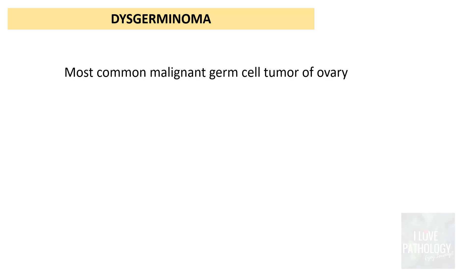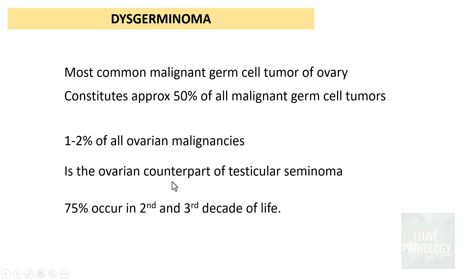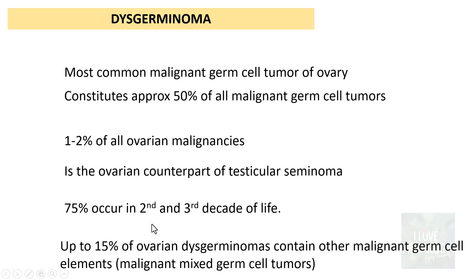Dysgerminoma is the most common malignant germ cell tumor of the ovary, constituting approximately 50% of all malignant germ cell tumors and 1 to 2% of ovarian malignancies. The most common ovarian malignancy overall is still surface epithelial tumors — serous and mucinous carcinomas. Dysgerminoma is the ovarian counterpart of testicular seminoma. 75% of dysgerminomas occur in the 2nd and 3rd decade of life, and up to 15% contain other malignant germ cell elements, which is why mixture of elements leads to malignant mixed germ cell tumors.